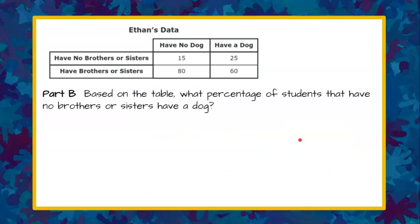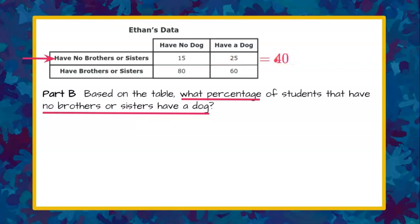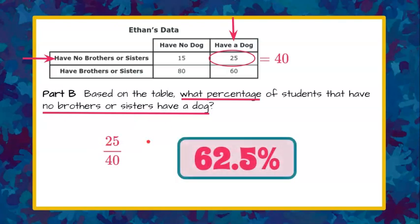Part B. Based on the data in the table, what percentage of students that have no brothers or sisters have a dog? Go ahead and pause. Welcome back. We're being asked to find the percentage of students that have no brothers or sisters and do have a dog. We already identified that 40 students said they have no brothers or sisters, and of those 40, the ones that have a dog is 25. To find the percentage, we do the ratio of 25 out of 40, divide and multiply by 100, and you get 62 and a half percent.